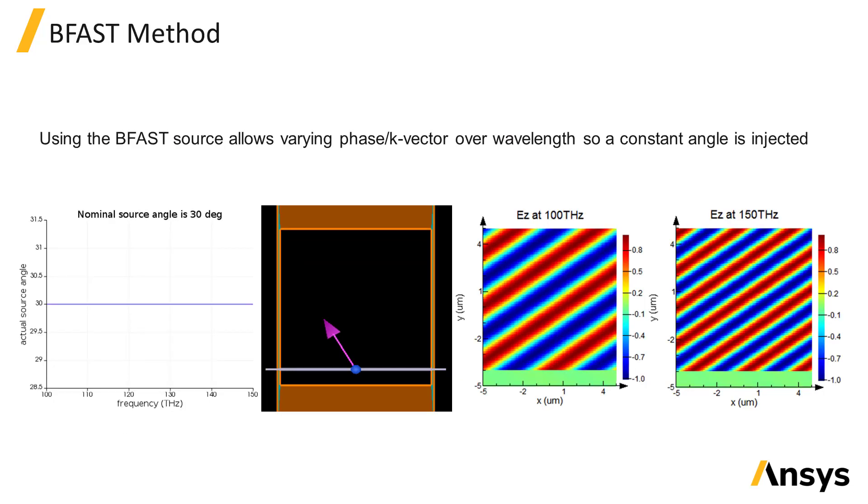For broadband simulations, the BFAST source type and boundaries should be used. BFAST is short for broadband fixed angle source technique, and it allows the injection of light at a constant angle over the broadband wavelength range. When using the BFAST plane wave source type, the sides of the simulation region will automatically use BFAST boundary conditions.